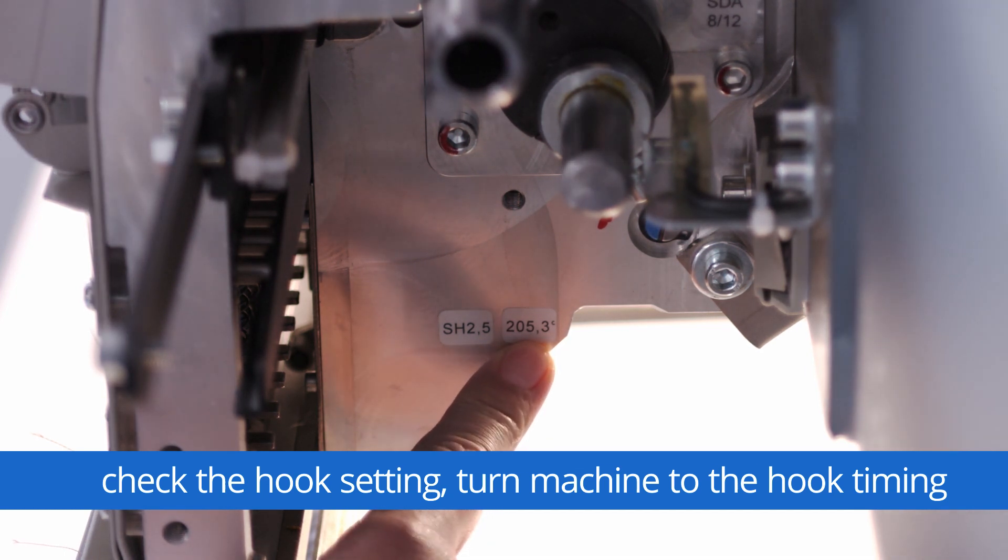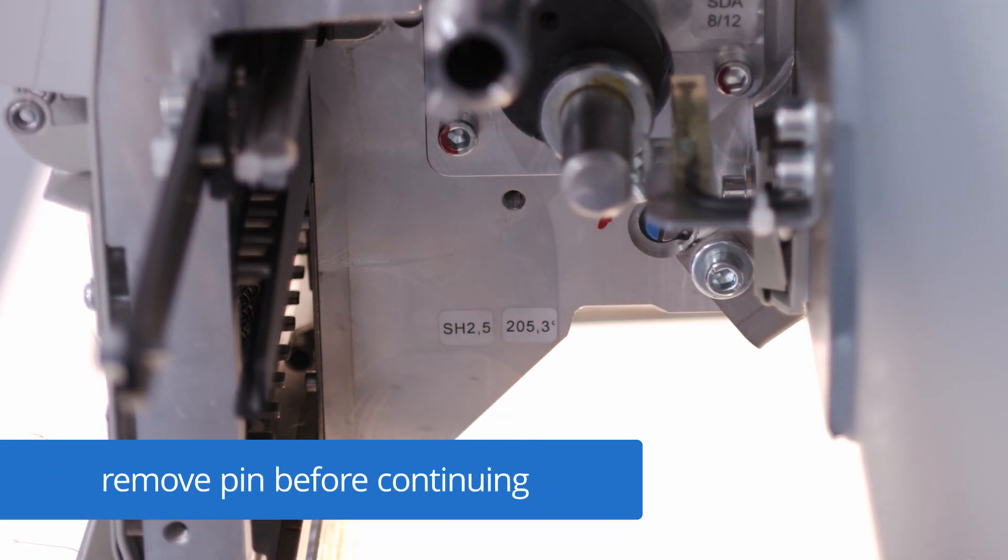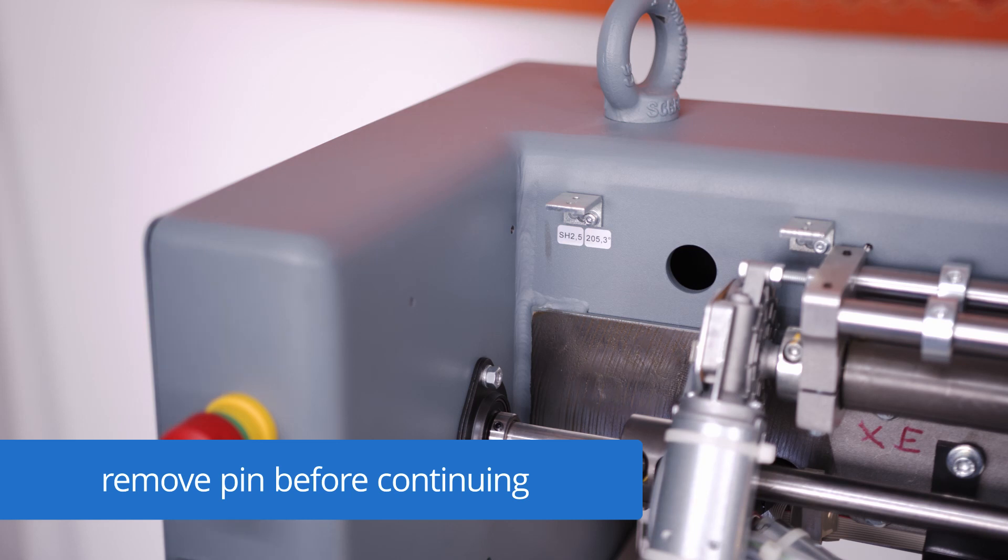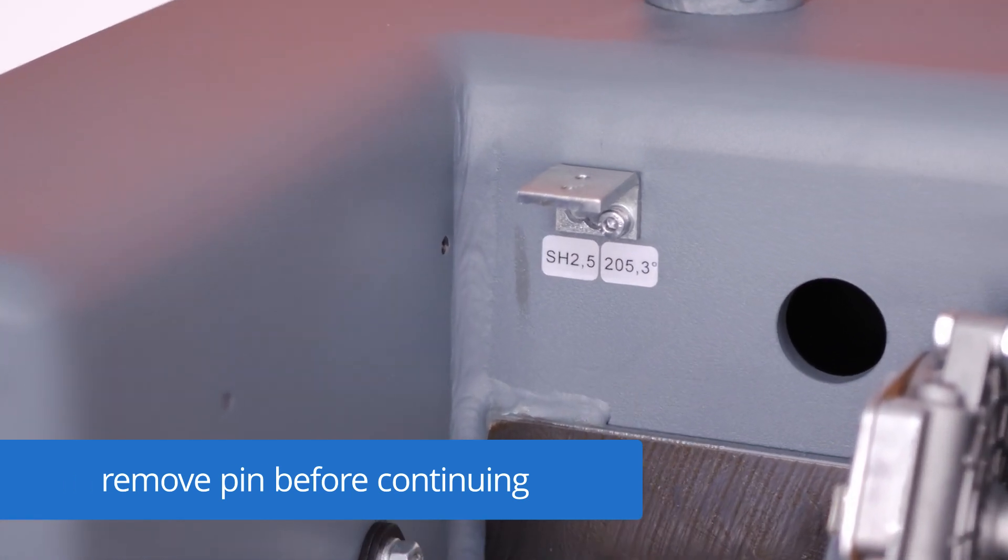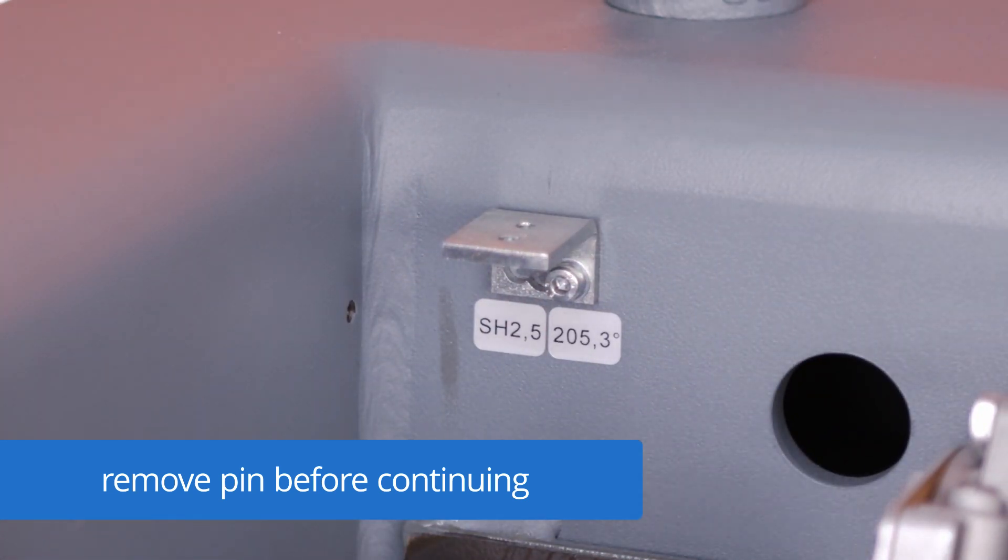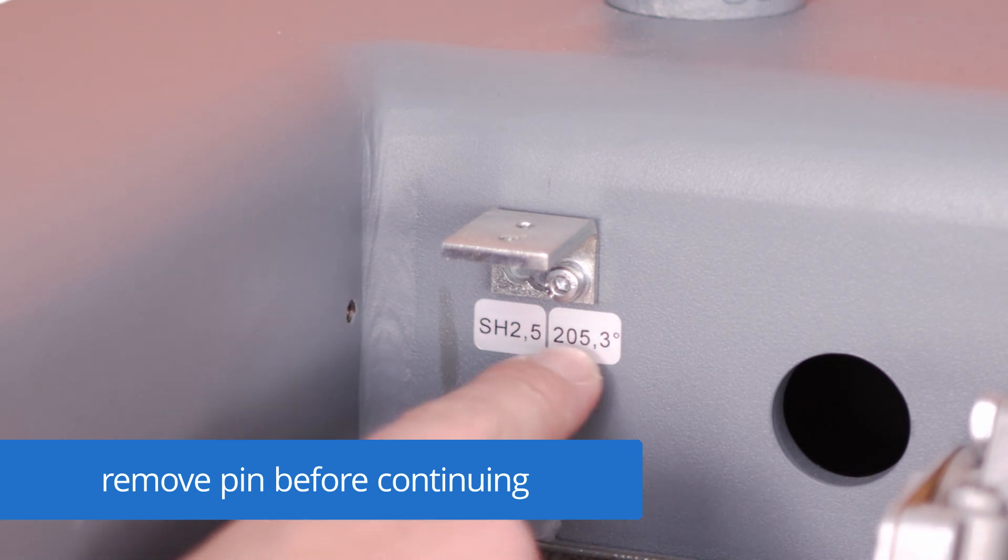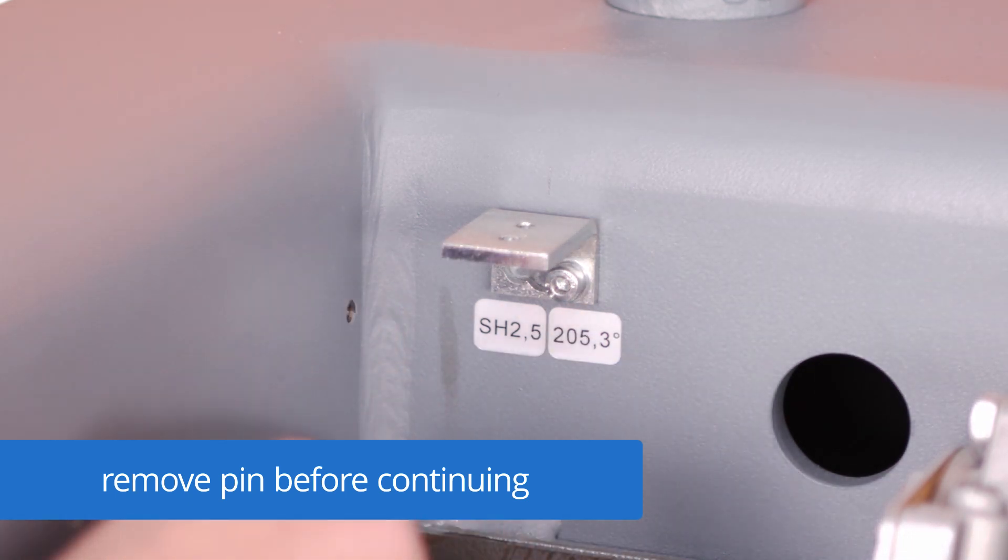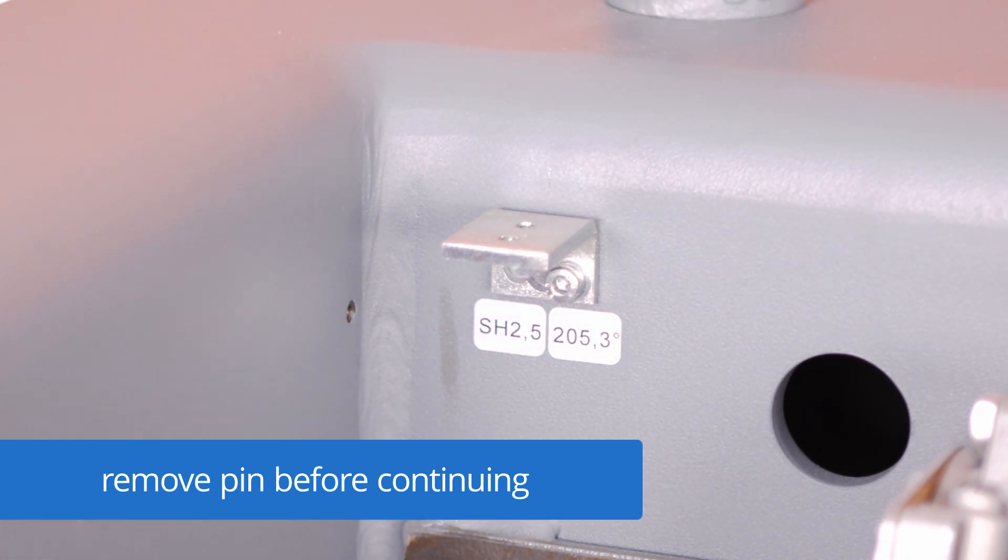If this sticker is washed away by oiling machine or something there is a second sticker under the cover of the needle change and the catcher motor. This machine has a hook timing point about 2.5 millimeters. That is between 205 and 206. If you have an older version it has a hook timing point of 2 millimeters. There it is between 202 to 204.